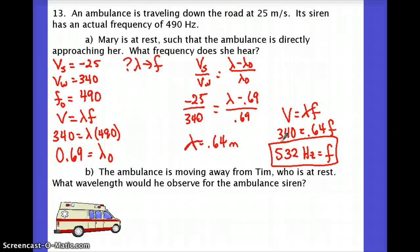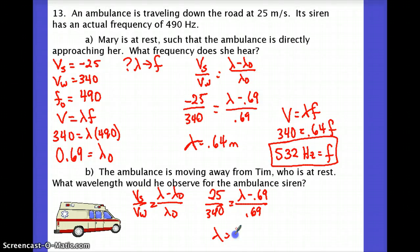And then real quick, the ambulance is moving away from Tim, and it just asks which wavelength. Now, lambda naught is the same because it's the same ambulance. So, for him, I can just do positive 25. And get his observed wavelength is 0.74 meters, bigger than what it actually is, as we would expect for something that's moving away from us.